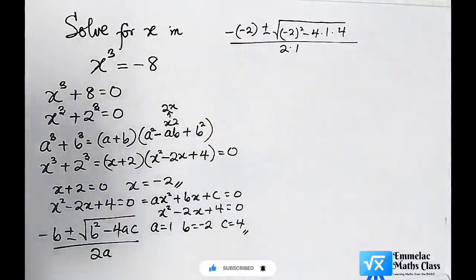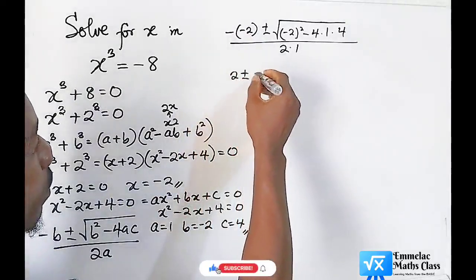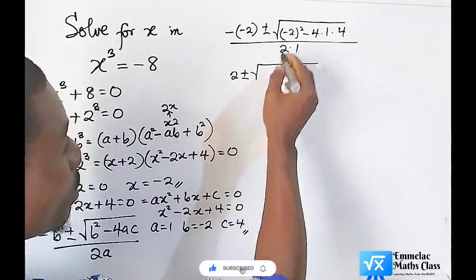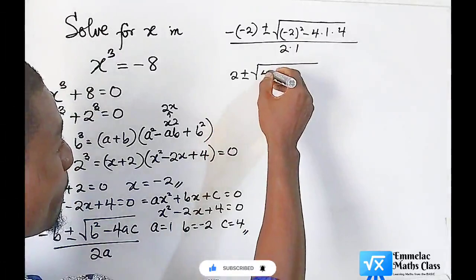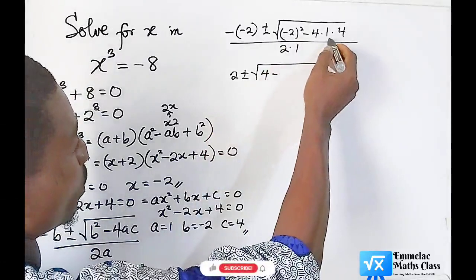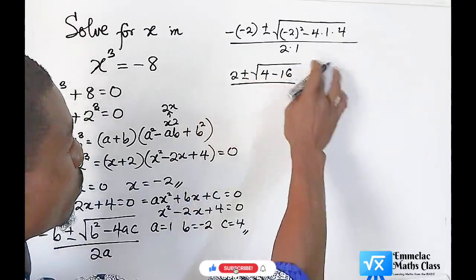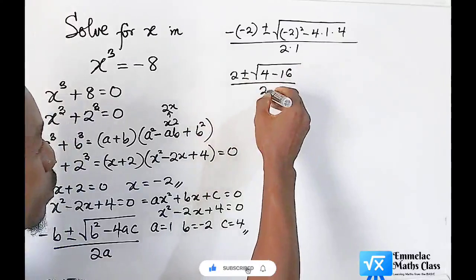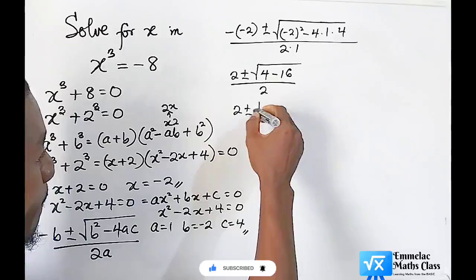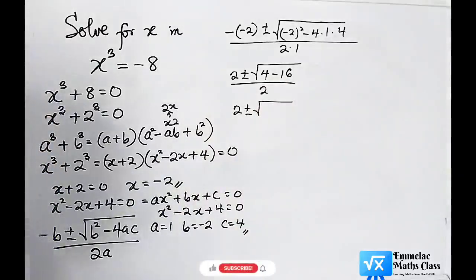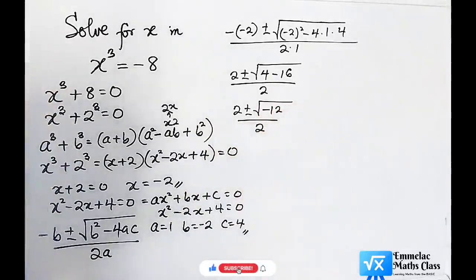Negative and negative give us positive. So here we have 2 plus or minus the square root of (-2)² which gives us 4, minus 4 times 1 times 4 which gives 16, all over 2. This equals 2 ± √(4 - 16) / 2, which is 2 ± √(-12) / 2.